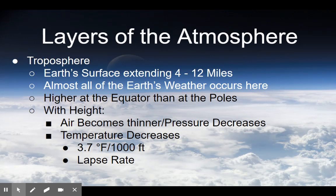Later on, we're going to focus on how warm air has higher heights and cooler air has lower heights. With height in the troposphere, the air becomes thinner and pressure decreases. Temperature decreases at about 4 degrees Fahrenheit per 1,000 feet. The decrease in temperature as you go higher up in the troposphere is referred to as the lapse rate.